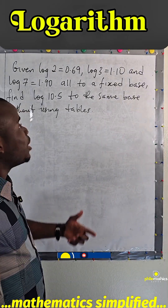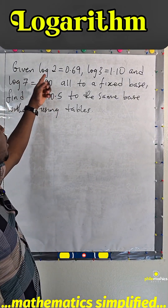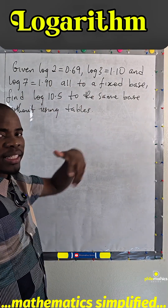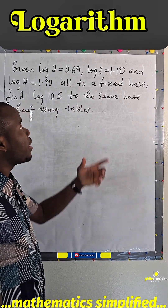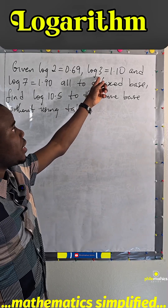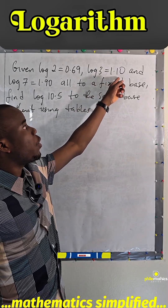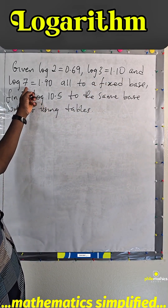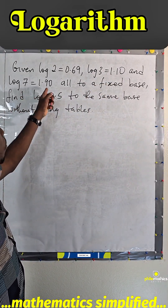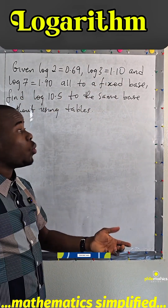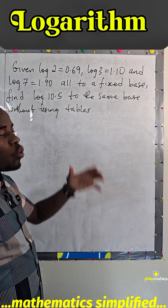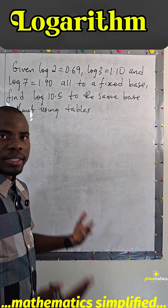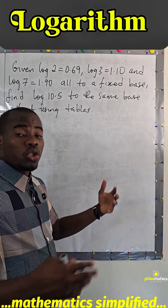In this problem, we are given log 2 to be 0.69, log 3 to be 1.10, and log 7 to be 1.90, all to a fixed base — which would be base 10, or it could be whatsoever.